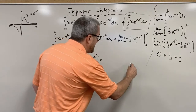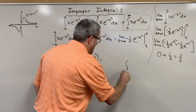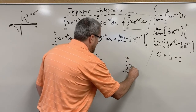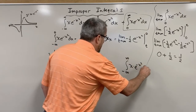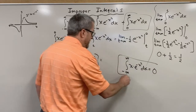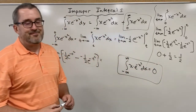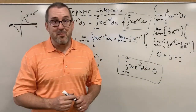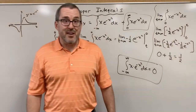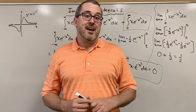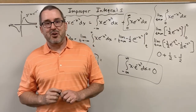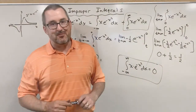So what we finally conclude is this: the integral from negative infinity to infinity of x times e to the negative x squared dx is indeed zero. Thanks for joining us on this improper integral journey. Please click on the next video to learn even more about calculus, and click on the Advantage logo to subscribe to our videos. We'll see you soon.